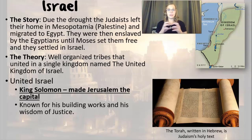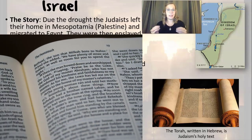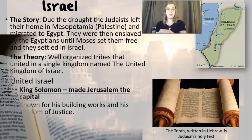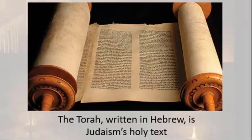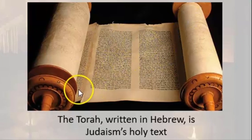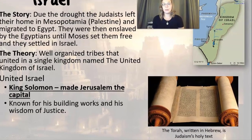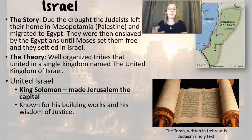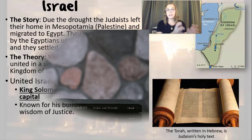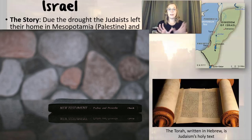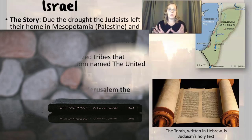That story is actually found in the Hebrew Bible. The Bible itself is made up of different parts. Jews focus on the first five books of the Bible, which is called the Torah — written in Hebrew — and that is the most important holy text for Jews. Christians view this as part of the Old Testament, and they also have a New Testament which is part of the Christian text.